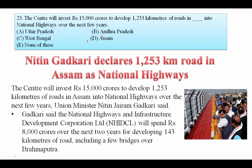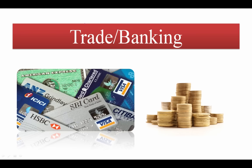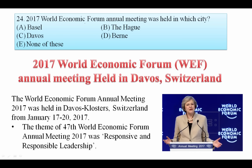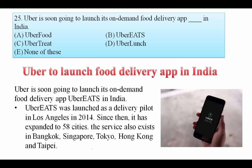Now let's see some trade and banking questions. The 2017 World Economic Forum Annual Meeting was held in Davos, Switzerland. Your answer is C. The theme was 'Responsive and Responsible Leadership.' You need to remember this.